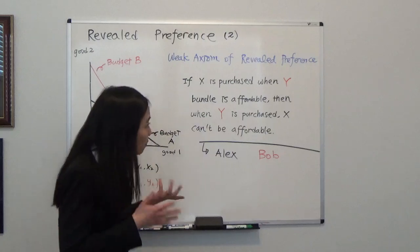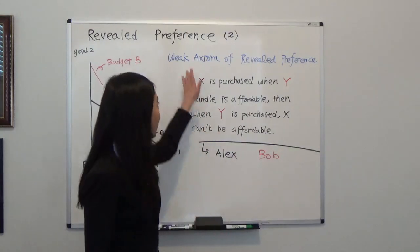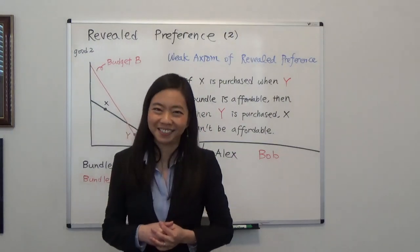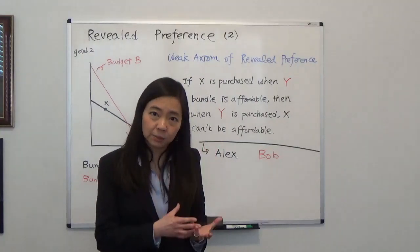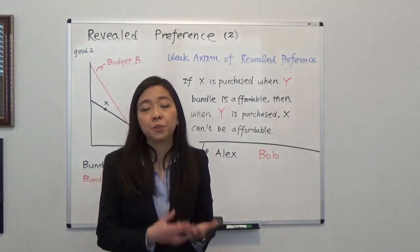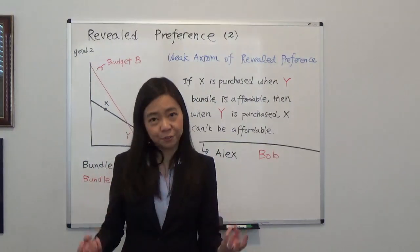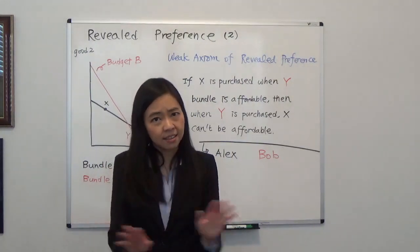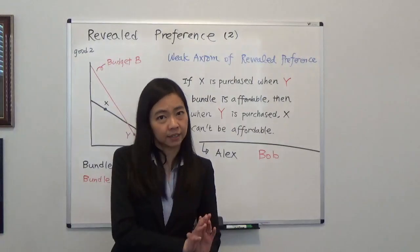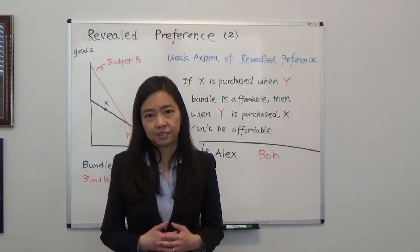So the formal definition of weak axiom of revealed preference is this. So if x bundle is revealed preferred to y bundle and x and y bundle are different, then it cannot be that y bundle is preferred to x. Otherwise, it would be inconsistent.